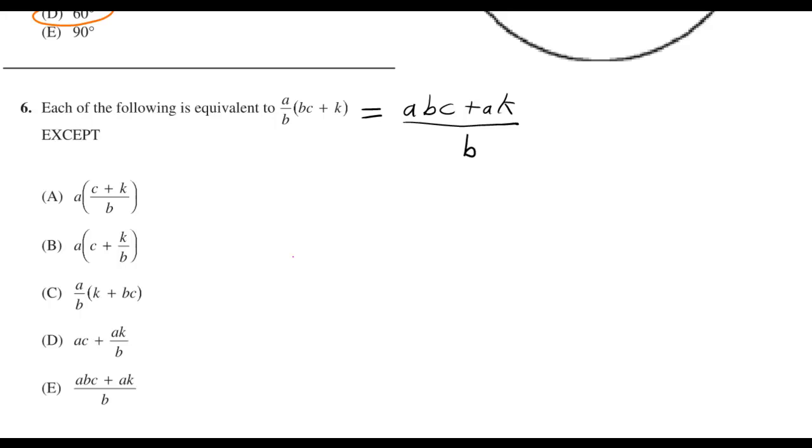What's good y'all. The problem asks which expression is equivalent to a over b times bc plus k, except which one. We need to find the one that ain't equal. What I first did is I put the second thing over one.